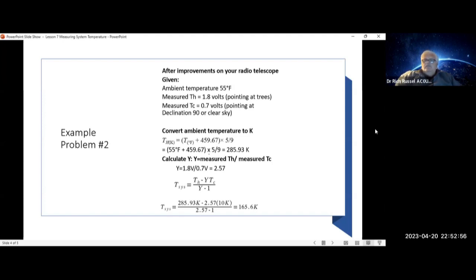Say your ambient temperature has gone down to 55 degrees Fahrenheit. When you point at the trees, you get T-Hot is equal to 1.8 volts, and your T-Cold is equal to 0.7 volts, pointing at declination 90 or clear sky.